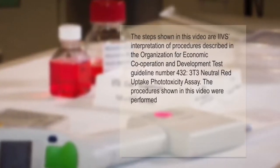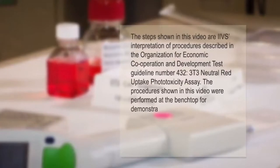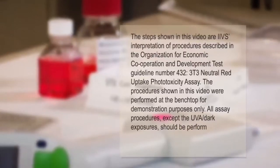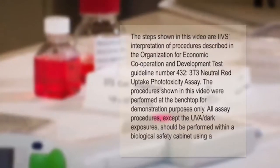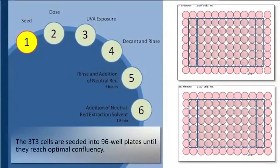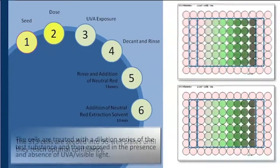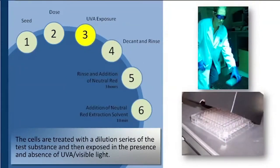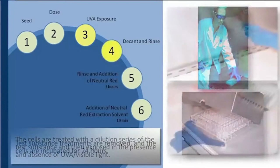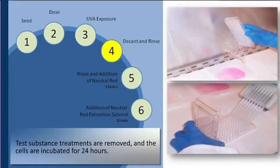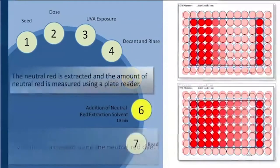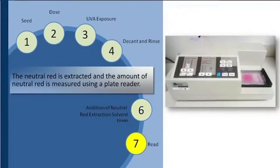The procedures shown in this video were performed at the benchtop for demonstration purposes only. All assay procedures except the UVA dark exposure should be performed within a biological safety cabinet using aseptic techniques. The 3T3 cells are seeded into 96-well plates until they reach optimal confluency. The cells are treated with a dilution series of the test substance and then exposed in the presence and absence of UVA visible light. Test substance treatments are removed and the cells are incubated for 24 hours. Viability is assessed using the neutral red dye, which is extracted and measured using a plate reader.